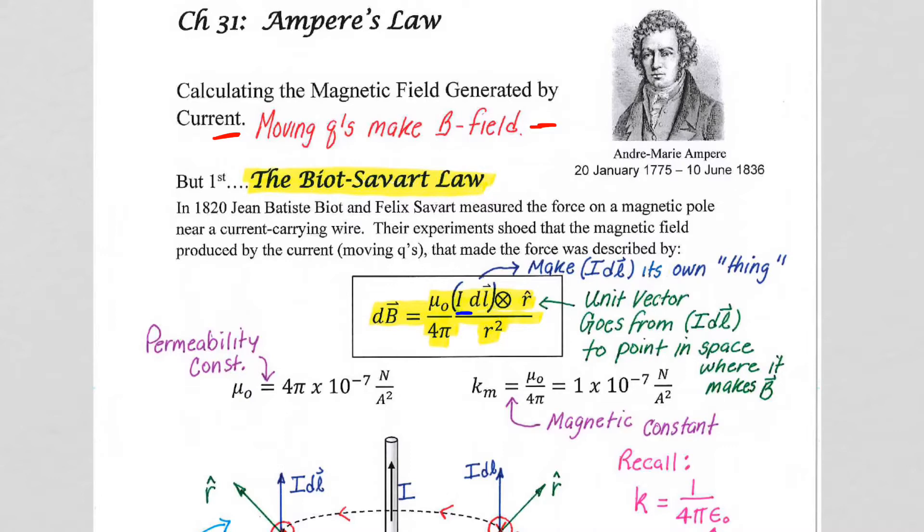But to give you some background as to what they did, in 1820, so quite a while before we understood anything about electrons, Biot and Savart measured the force on a magnetic pole, which is really, for us, we can just think of it as measuring the force on another current carrying wire. We'll understand why that makes sense later in this chapter, but think of it as measuring the force on another wire.